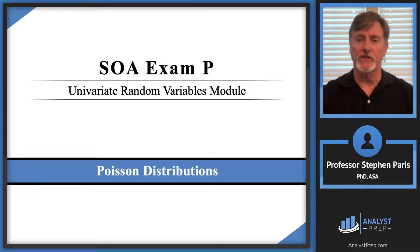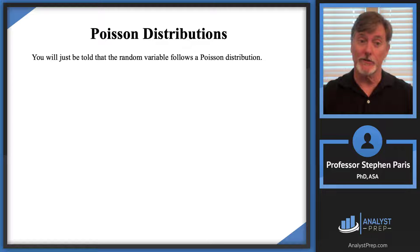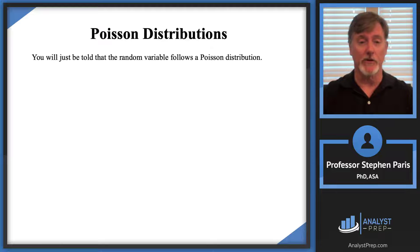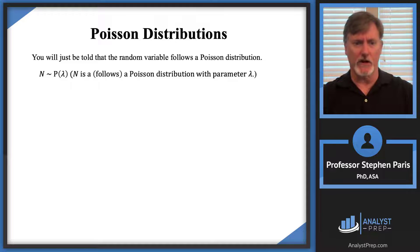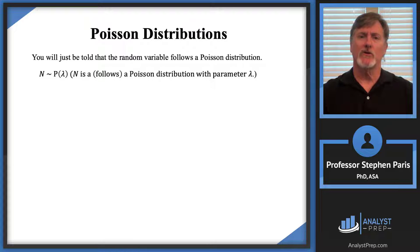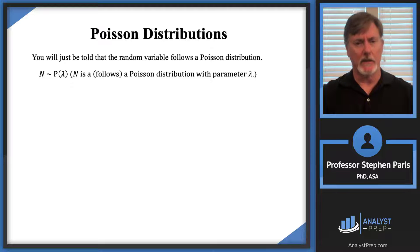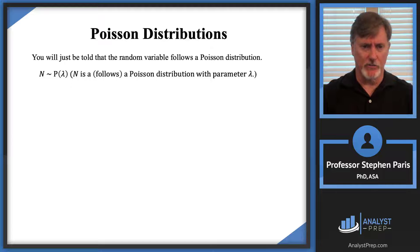In this video we're going to talk about what's called a Poisson distribution. These are easy to recognize in a problem because you'll simply be told that the random variable follows a Poisson distribution. Our notation uses the tilde symbol to indicate that the random variable follows a distribution. The parameter for the Poisson distribution is a lowercase Greek letter lambda, so we write N ~ Poisson(lambda) — a one-parameter distribution.